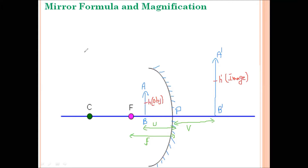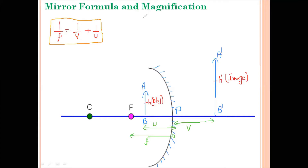Mirror Formula gives the relation between object distance U, image distance V, and focal length F. The mirror formula is given by: 1/F = 1/V + 1/U. We are going to use this formula while solving numericals.